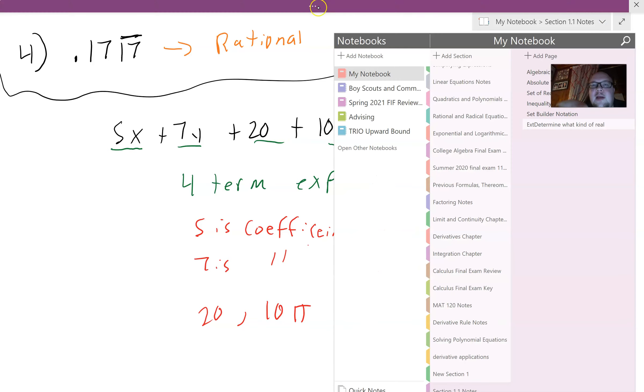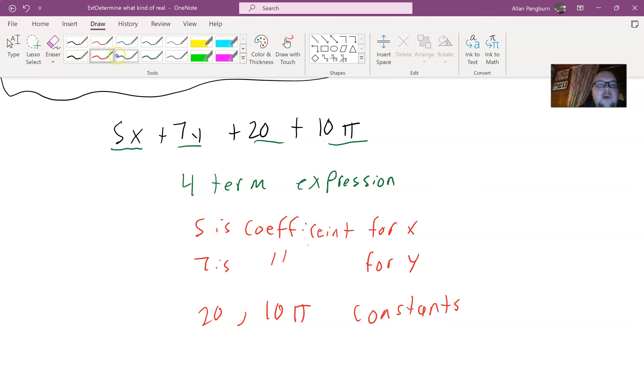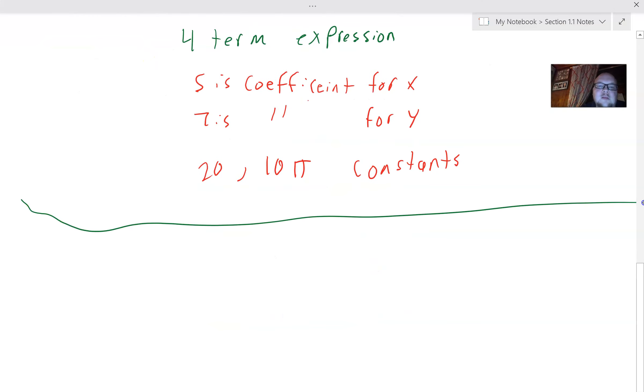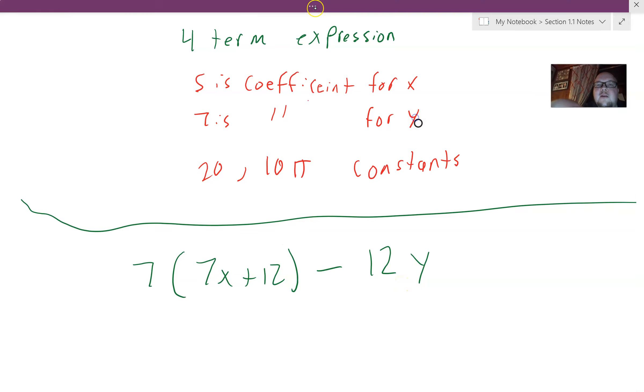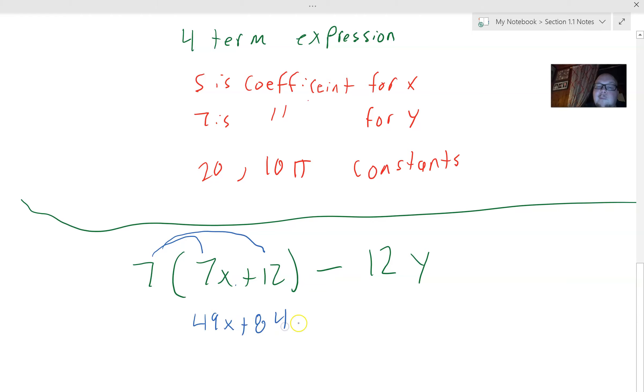So now one other thing, let's take a look at a distribution here right quick. So let's say I gave you 7 parentheses, 7X plus 12 minus 12Y. So with here, to simplify this, you would distribute 7, just like this, 7 to 7X, 7 to 12. And we multiply. So this is 49X plus 84 minus 12Y. We can't simplify any further because nothing looks alike. So we just leave it alone.